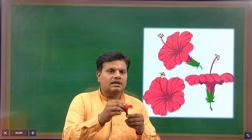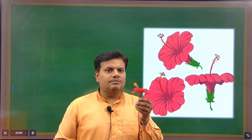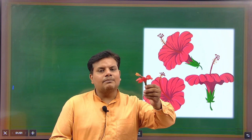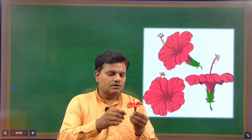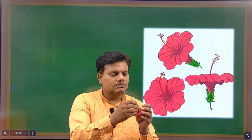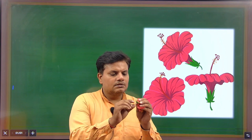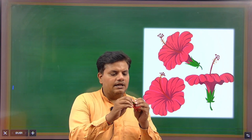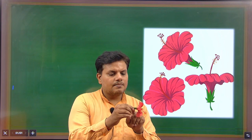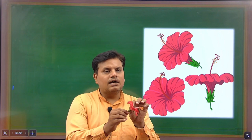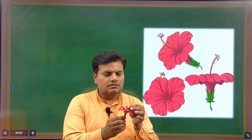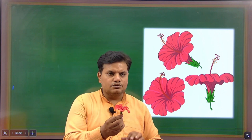It is a flower of hibiscus. Hibiscus flower has five parts. First is the Epicalyx, and then Calyx, Corolla, Androecium, and in the middle Gynoecium.